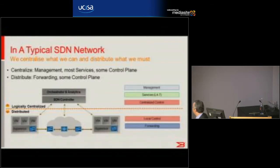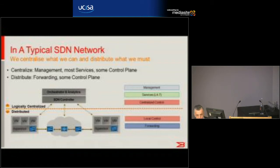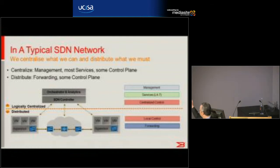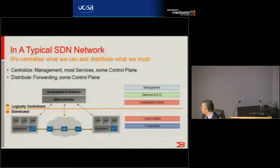We separate the control planes. When you're looking at forwarding — moving packets from one place to another — logically that needs to be local. When you're looking at control, you don't want everything done in the centralized intelligence, otherwise every time you want to route a packet you go back to the brain in London. We like some regional devolution. So when we look at the control plane, we have some centralized intelligence and some intelligence locally — that's called pipelining — the ability to decide where a flow is going. Once we've decided, the control plane locally can get on with it. But we centralize services and we centralize management.